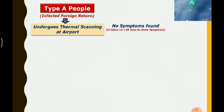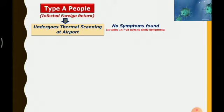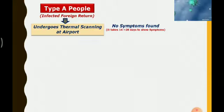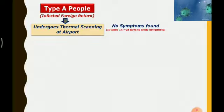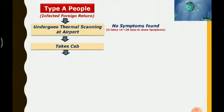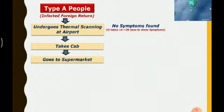COVID-19 shows symptoms between 14 to 28 days — it will not show symptoms immediately. So most people escape from this thermal scanning. Once the thermal scanning is completed, the Type A person takes a cab and may go to, for example, a supermarket to purchase something.